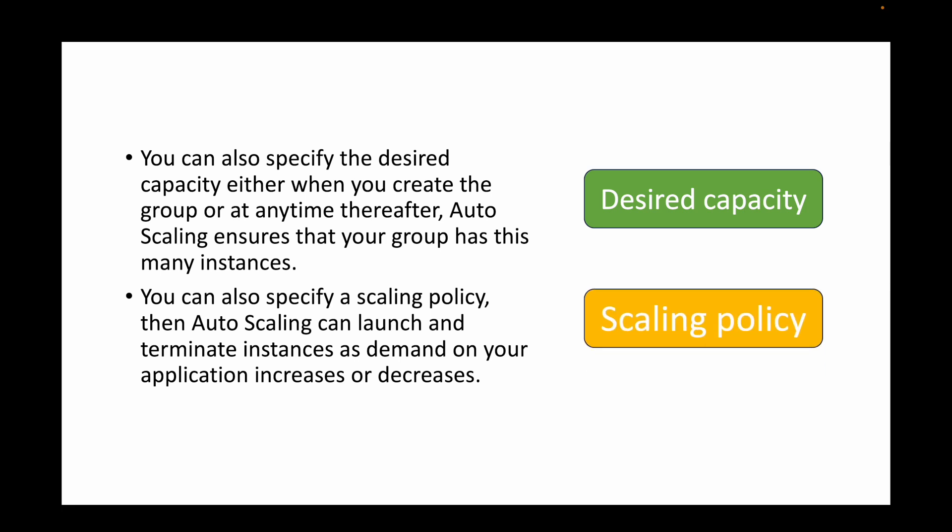This is the scaling policy option: the auto scaling group will automatically terminate and launch instances based on demand. If the load on the application increases or decreases, the auto scaling group will automatically scale up or scale down. Essentially, auto scaling groups can be used whenever you want to automate the scaling up and scaling down of your EC2 instances.